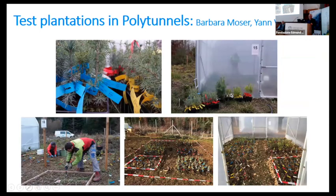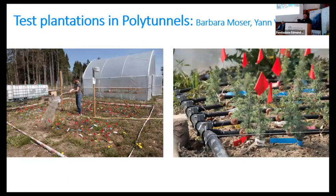In these polytunnels, we plant the six different species using four provenances each. The trees were planted last fall, both outside in ambient conditions and inside the polytunnels. In the first year we need to ensure most survive. Afterwards, there will be an automatic irrigation system that will deliver only 50% of ambient precipitation, so we can check different future climates.